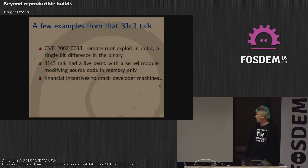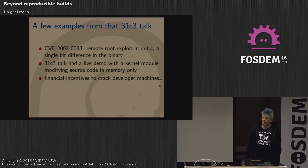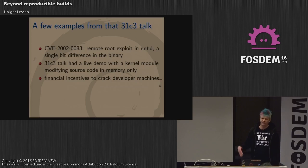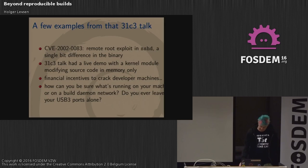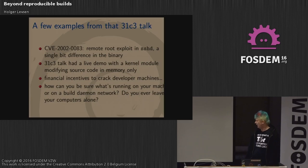They also showed how much financial incentive there is to break developer machines. If you can plant an exploit in one machine and it gets distributed in millions of copies, you can get people's financial data, private data, or circumvent censorship — countries have hundreds of millions in budget for that. There's really lots of money to crack one machine — it could be a developer machine or the build daemons of a software project like Debian or Fedora. An attacker with 50 million dollars can buy zero-days. You don't really know what's running when you leave your machine on the net, and USB 3.0 has direct memory access, so if you leave your computer alone, it's in danger.